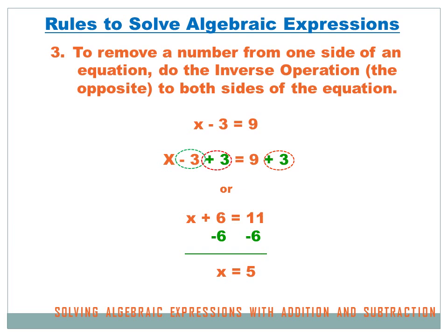Here's another example. I've got x plus 6 equals 11. We're going to do the inverse operation to get rid of the 6, looking at it like an addition or subtraction problem. I subtract 6 from both sides — subtracting 6 from x plus 6 and subtracting 6 from 11. x plus 6 minus 6 is just x, and 11 minus 6 is 5. So x equals 5.